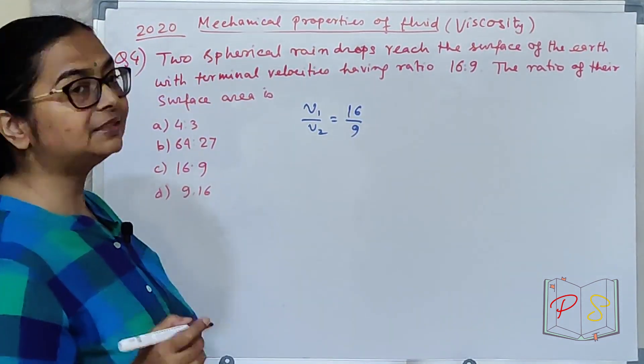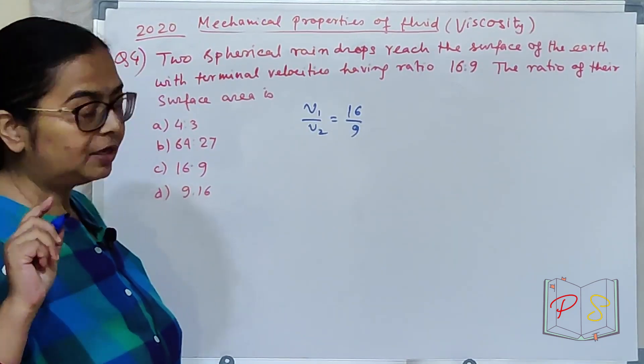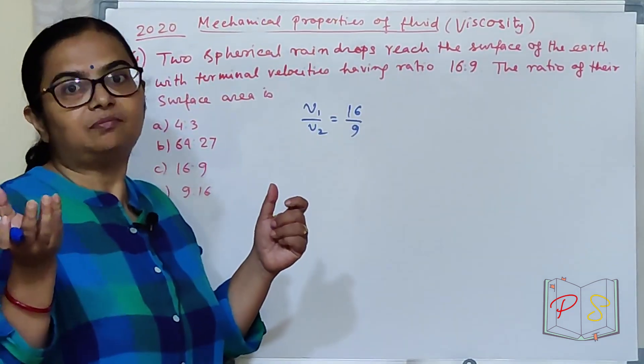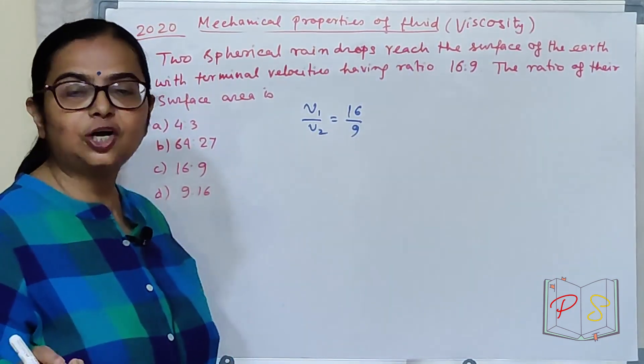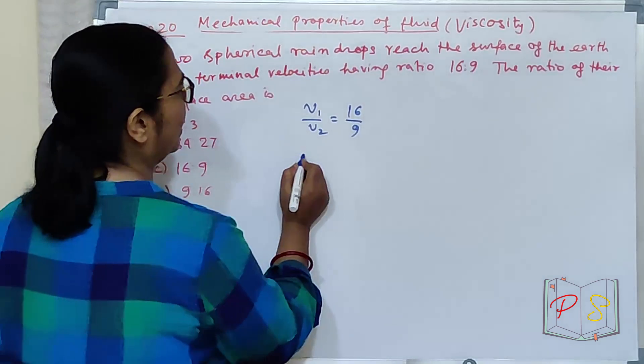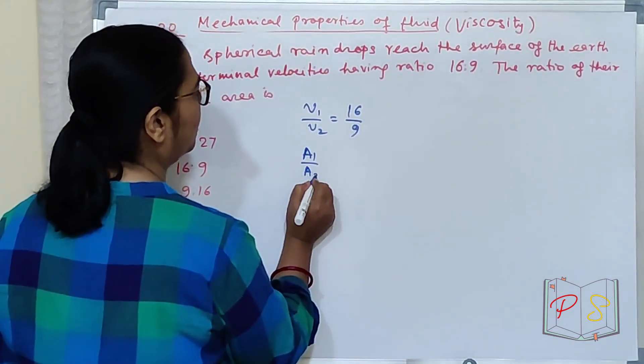V1 by V2 dehiya 16 by 9. The ratio of their surface area. Aapka surface area. A definitely bada size ka ho ga e, a chota size ka ho ga e, isi liye to terminal velocity ka ratio aya hai. Thik hai? To surface area kya hai? A1 by A2 aapko mangha hai.